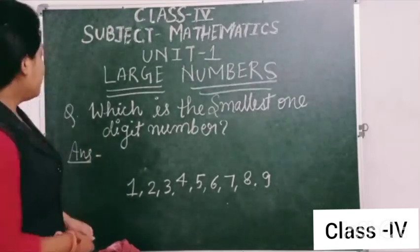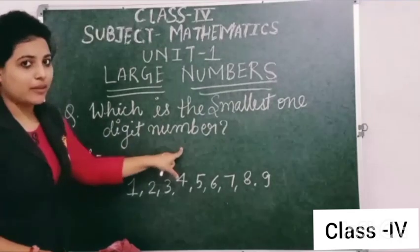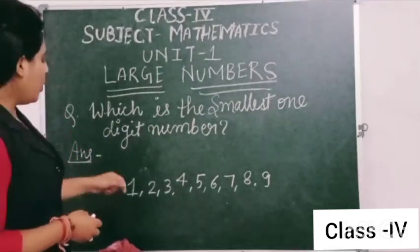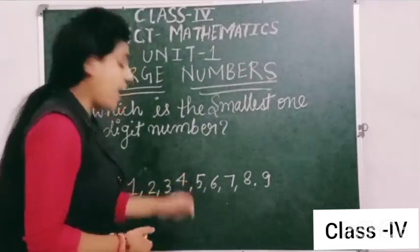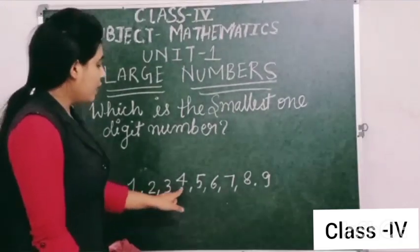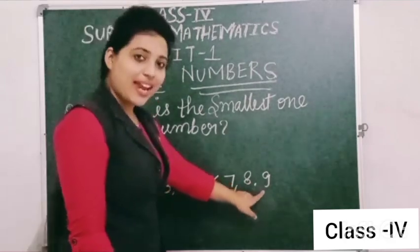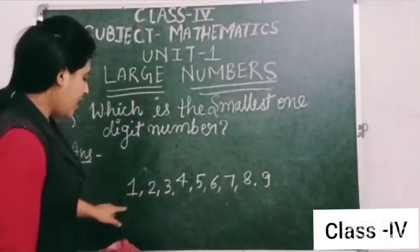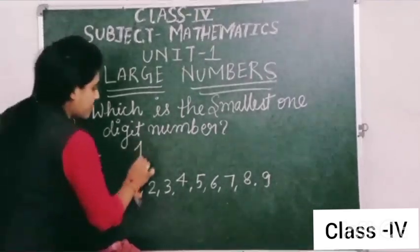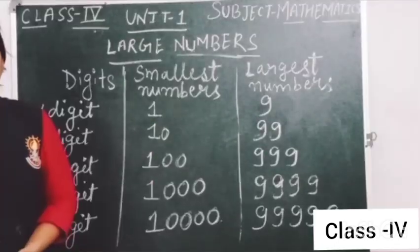So students, similarly, which is the smallest one-digit number? Anyone know? Look here. One-digit numbers are 1 to 9: 1, 2, 3, 4, 5, 6, 7, 8 and 9. So here the smallest one-digit number is 1. So the answer is 1.